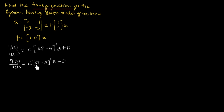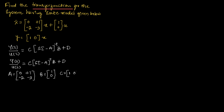Let us find SI minus A first. We can write matrix A which is equal to [0, 1; -2, -3], B which is equal to [1; 0], and C that is equal to [1, 0]. Now let us find SI minus A. We write S times I, where I is the identity matrix [1, 0; 0, 1], minus matrix A [0, 1; -2, -3].